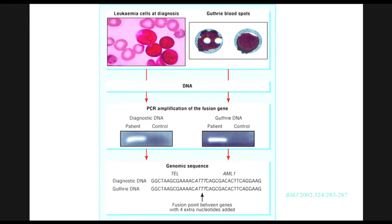This is the way that we study the timing of origin. On the left-hand side of this slide, we see leukemia cells at the time of diagnosis. We're able to sequence the structure of the translocation — in this case, it's a tel-AML translocation in the leukemia cells — and also look back at a Guthrie or neonatal blood spot for the presence of that translocation at the time of birth. In this particular child, the translocation was found to be prenatal in origin. By now, we've studied many of these translocations or genetic events in leukemia, and we found that the timing of their origin for most of them is prenatal.